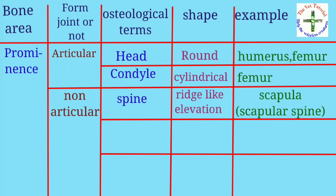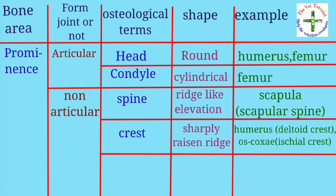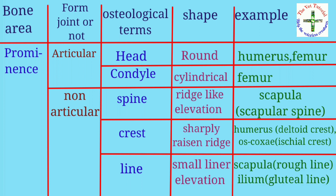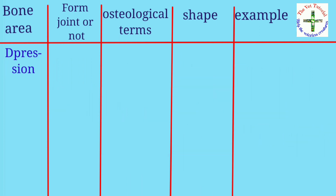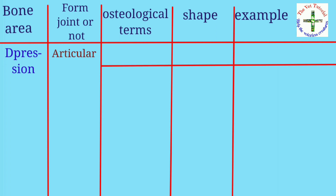Fourth is spine, shape is ridge-like elevation, example scapula — scapular spine. Fifth is crest, shape is sharply raised ridge, example humerus — deltoid crest, lateral epicondyloid crest — and coccyx with axial crest. Sixth is line, shape is small linear elevation, example scapula — rough lines — and ileum — gluteal lines.